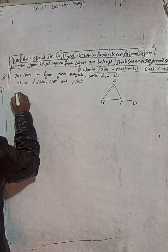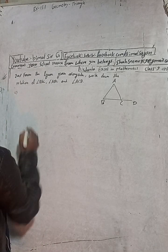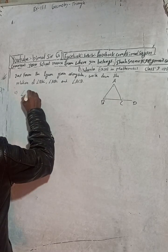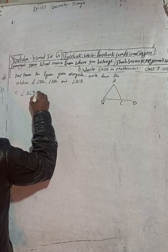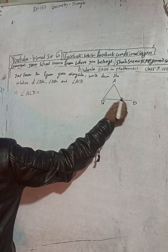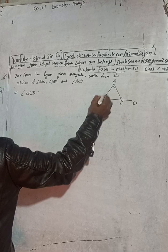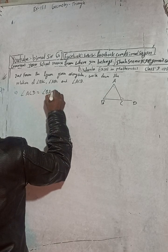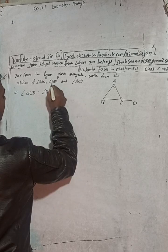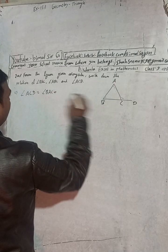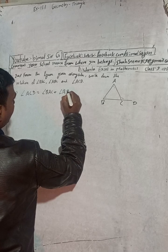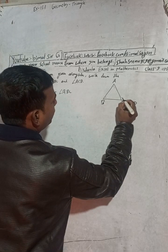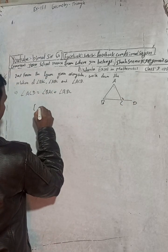The answer is angle ACD. This angle ACD is equal to this angle plus this angle. Angle BAC plus angle ABC. This is the relation and the reason for this is exterior angle.